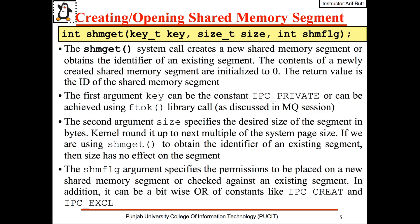The shmget system call creates a new shared memory segment or obtains the identifier of an existing segment. The contents of the newly created shared memory segment are initialized to zero, and the return value is the ID of the shared memory segment. The first argument, key, can be the constant IPC_PRIVATE or can be achieved using the ftok library call, as we have seen in our previous session on message queues. The second argument, size, specifies the desired size of the segment in bytes, and the OS kernel rounds this up to the next multiple of the system page size. The third argument, shmflag, specifies the permissions to be placed on a newly created shared memory segment.